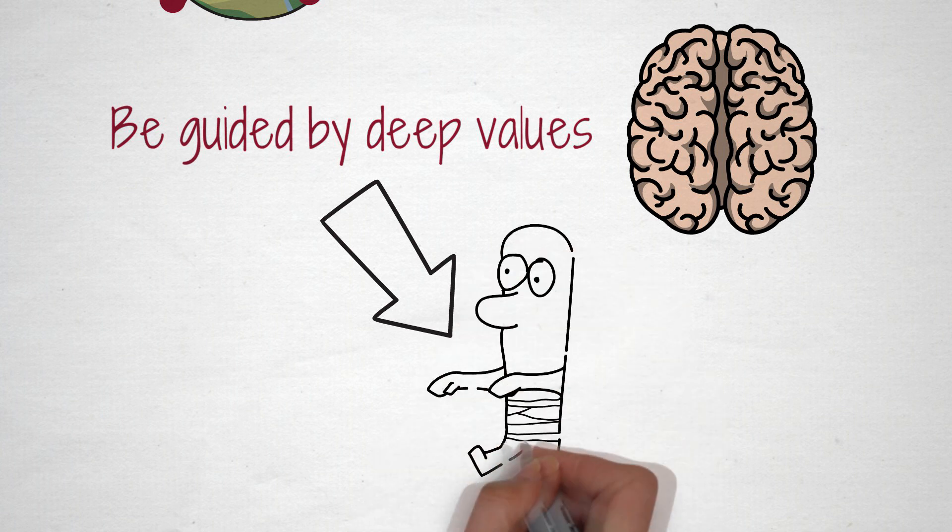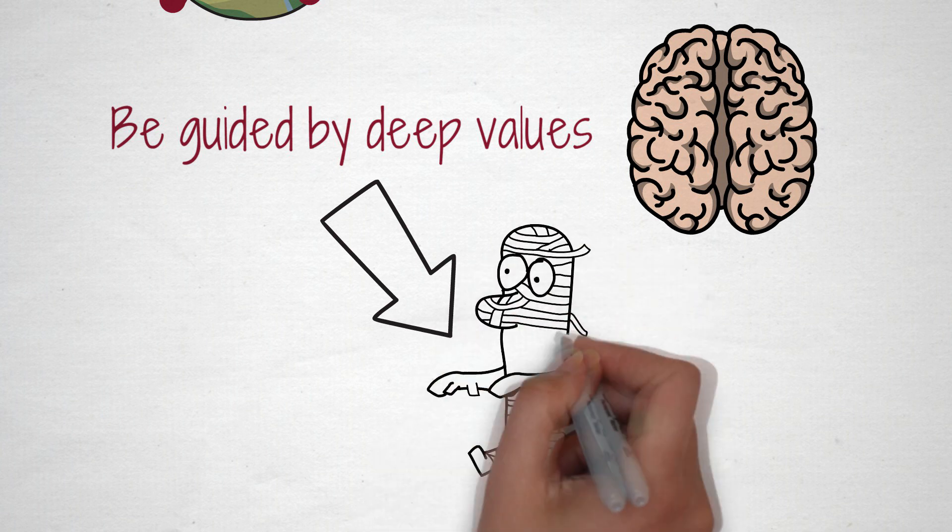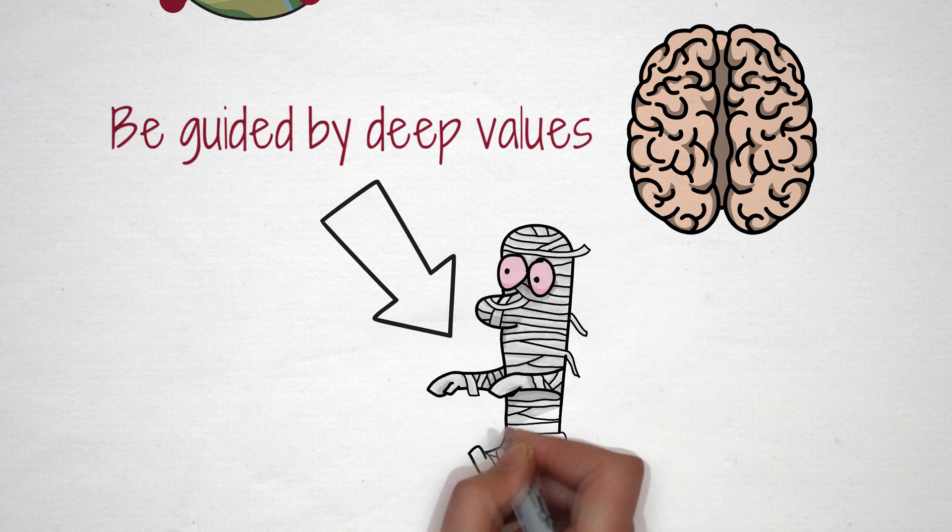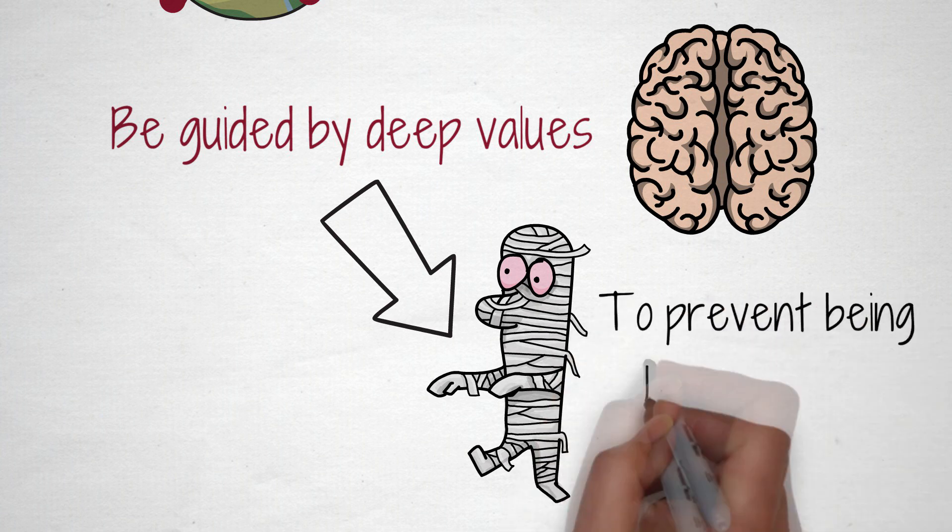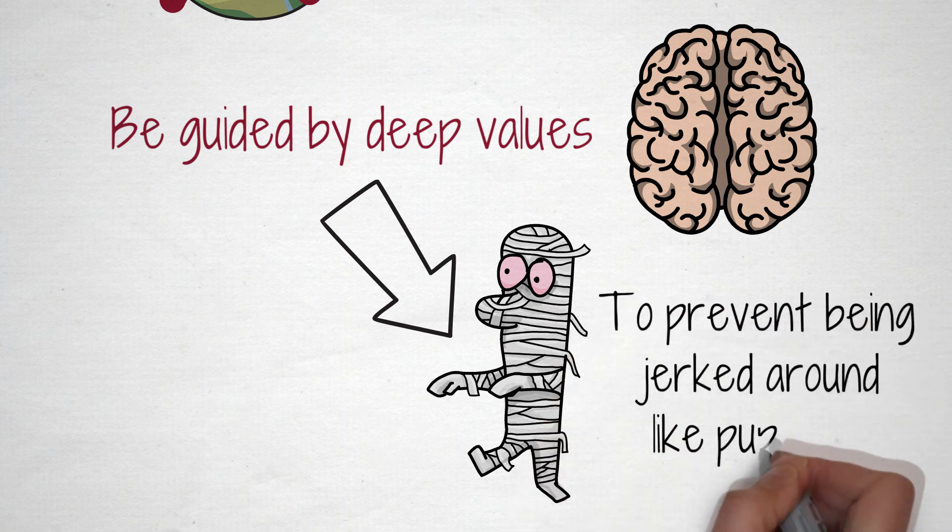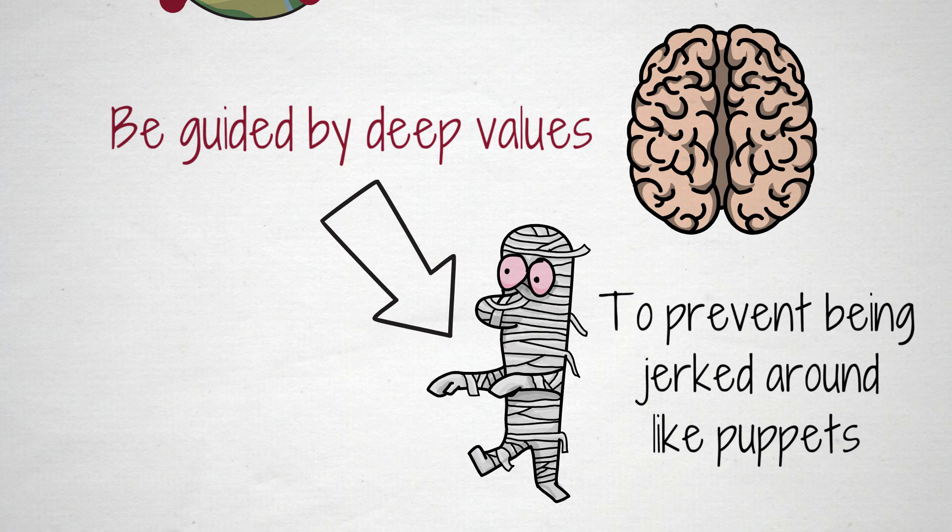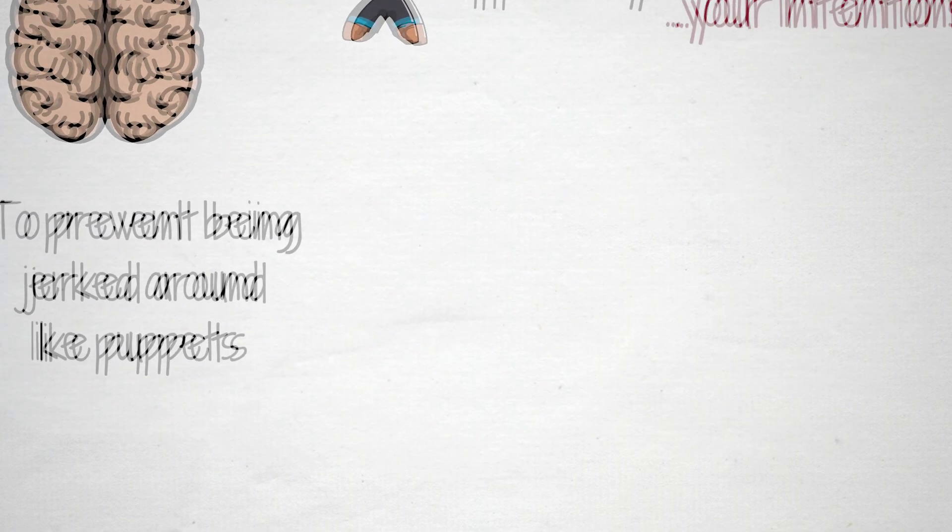Our values and mindfulness of the present moment prevent us from being puppets. These things won't come automatically but require hard work. As aspiring Stoics, we choose to work hard and become our own masters rather than getting jerked around by every inconvenience.